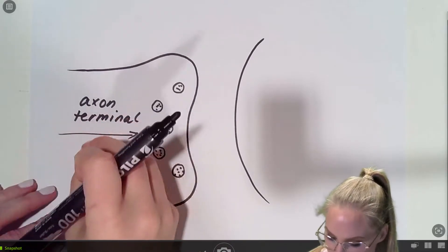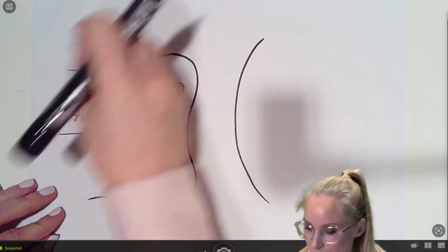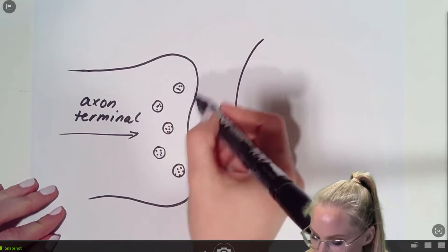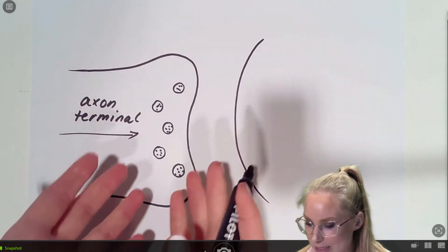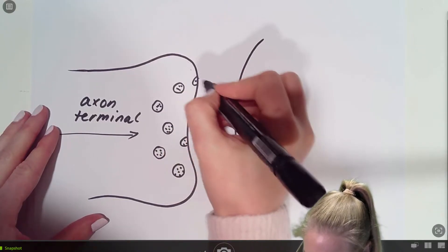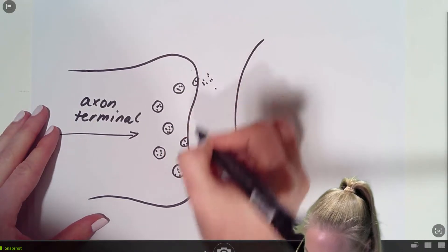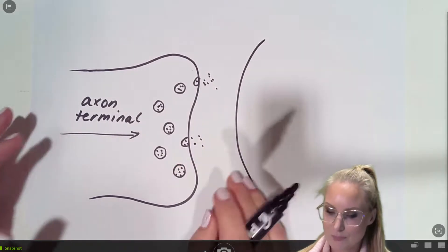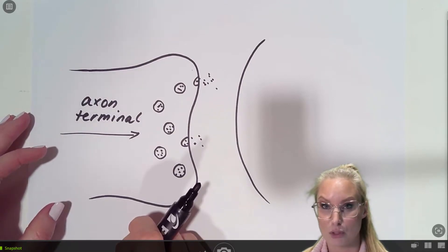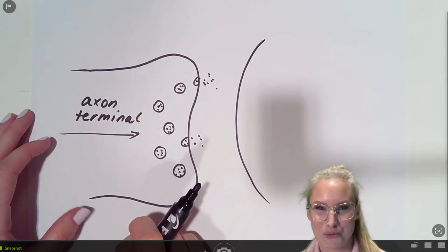So once this action potential reaches the axon terminal, what it does is it causes these tiny little vesicles, which are full of neurotransmitter, to release their contents. And each one of these vesicles contains about a thousand neurotransmitter molecules, but obviously I can't quite draw that many.